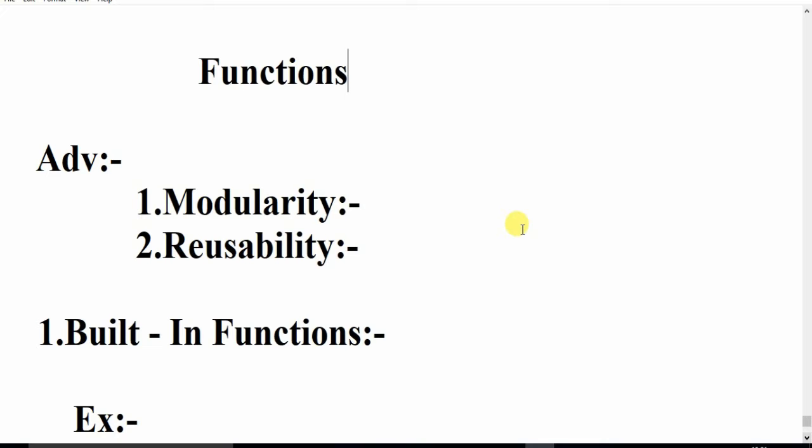There should be one function called the main function, because program execution always starts from main itself. That is the reason every C program should have a collection of functions with one function named main.